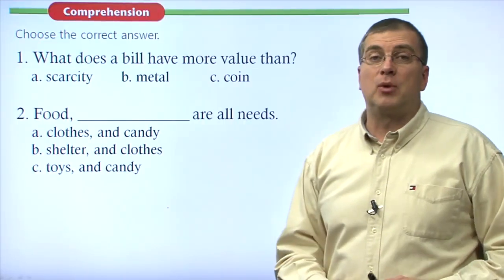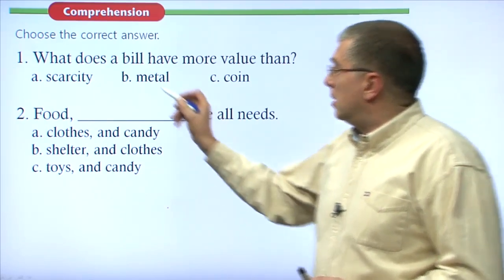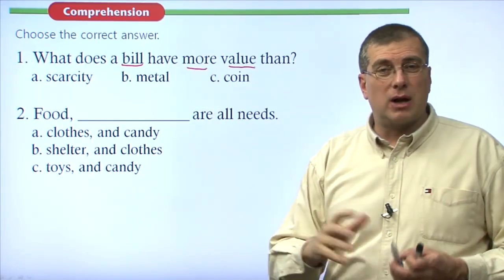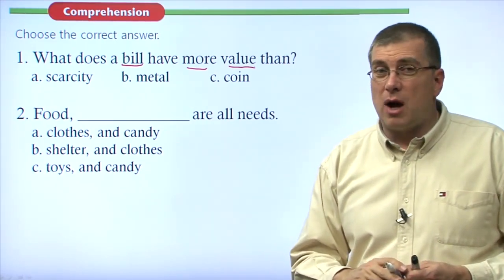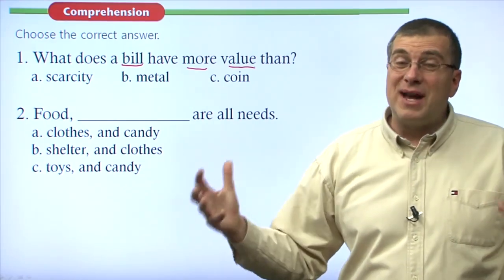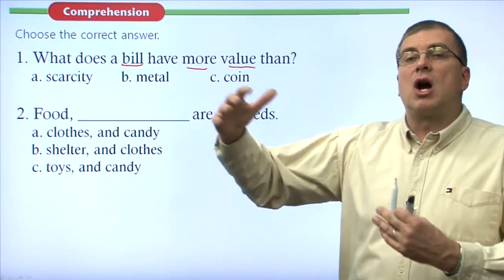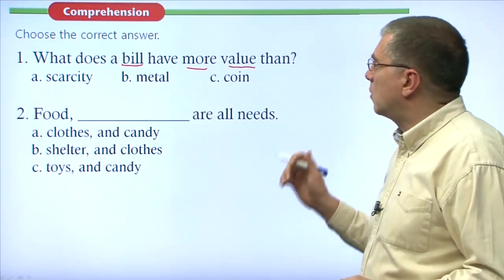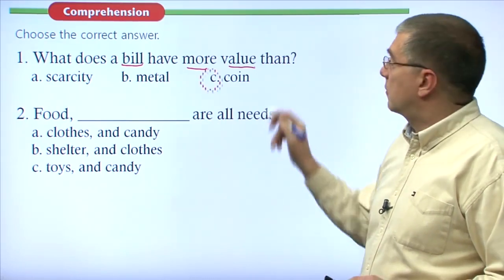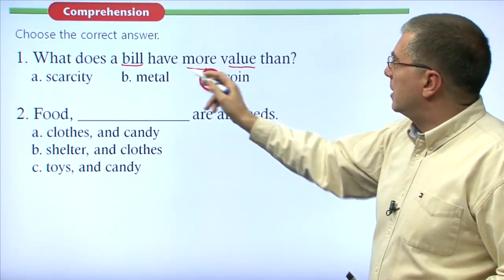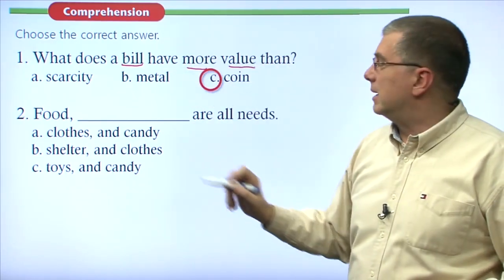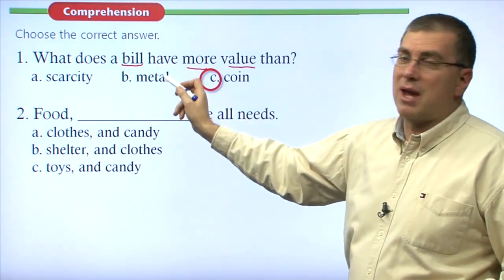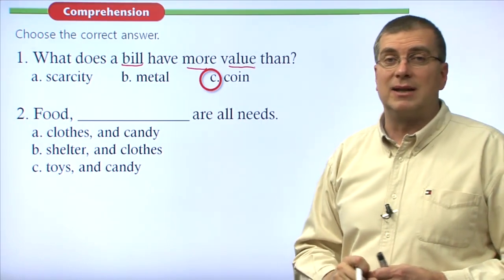Reading comprehension question one: 'What does a bill have more value than?' Bills are usually larger amounts of money. There are two types of money — bills and coins. A bill has more value than a coin. Not scarcity, not metal — it's coin. A bill has more value than a coin. Those are the two types of money, so coin is our answer.